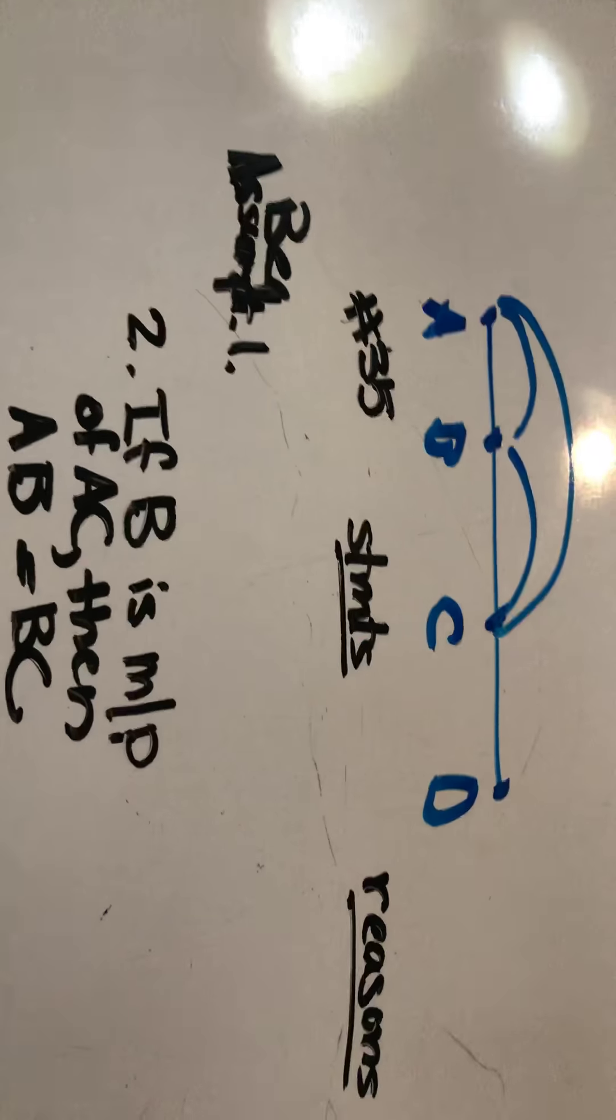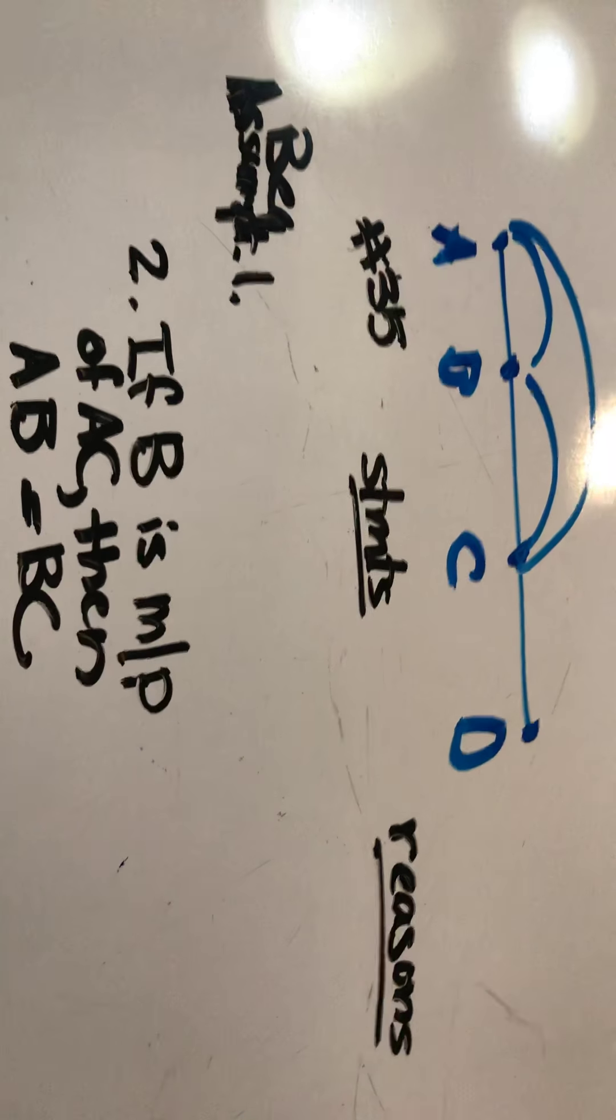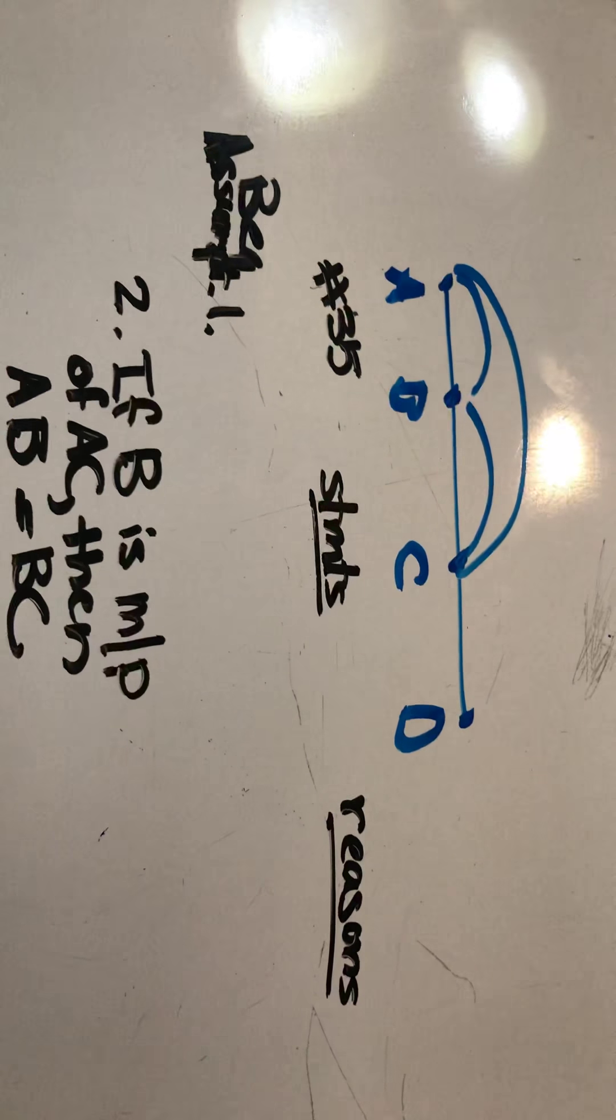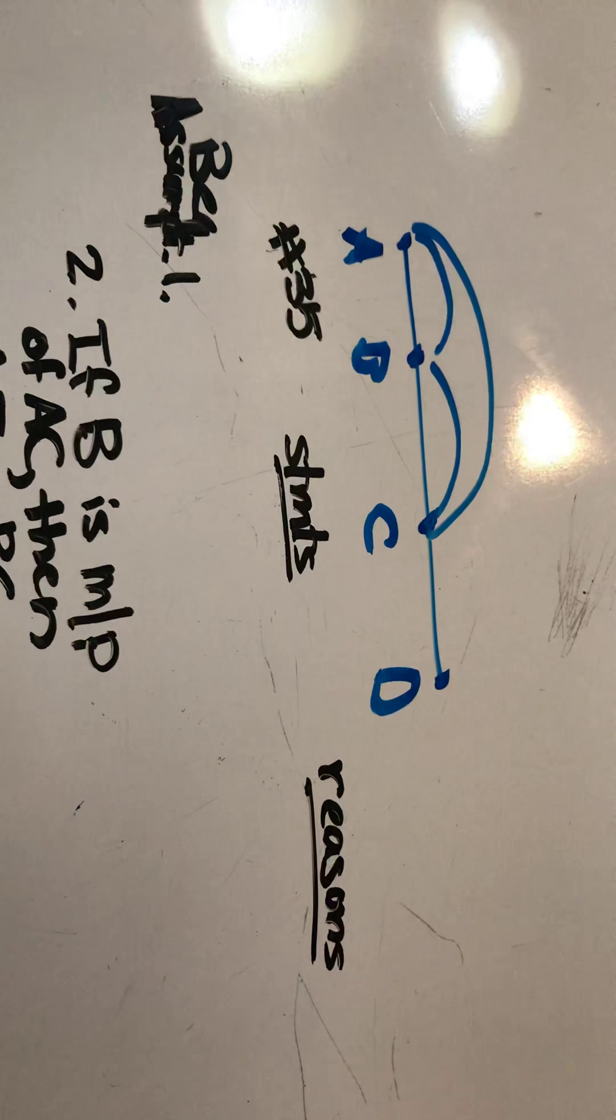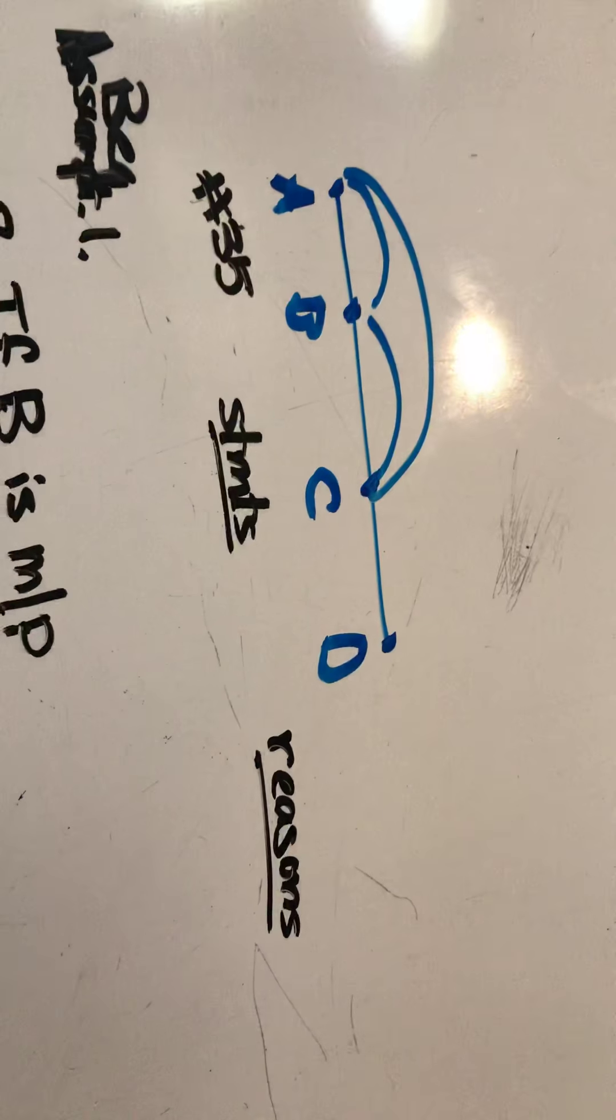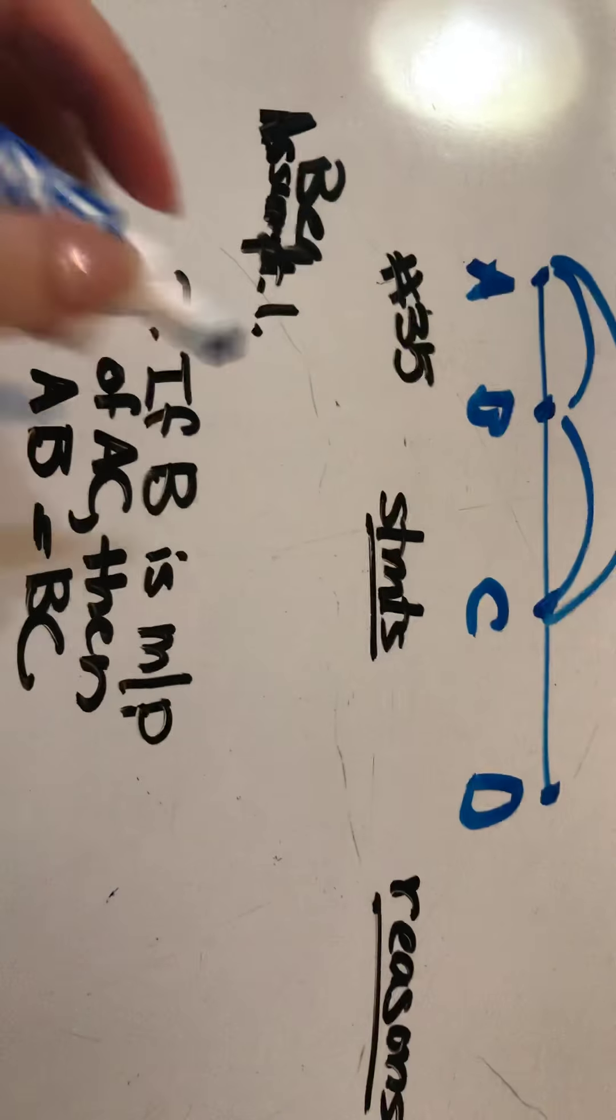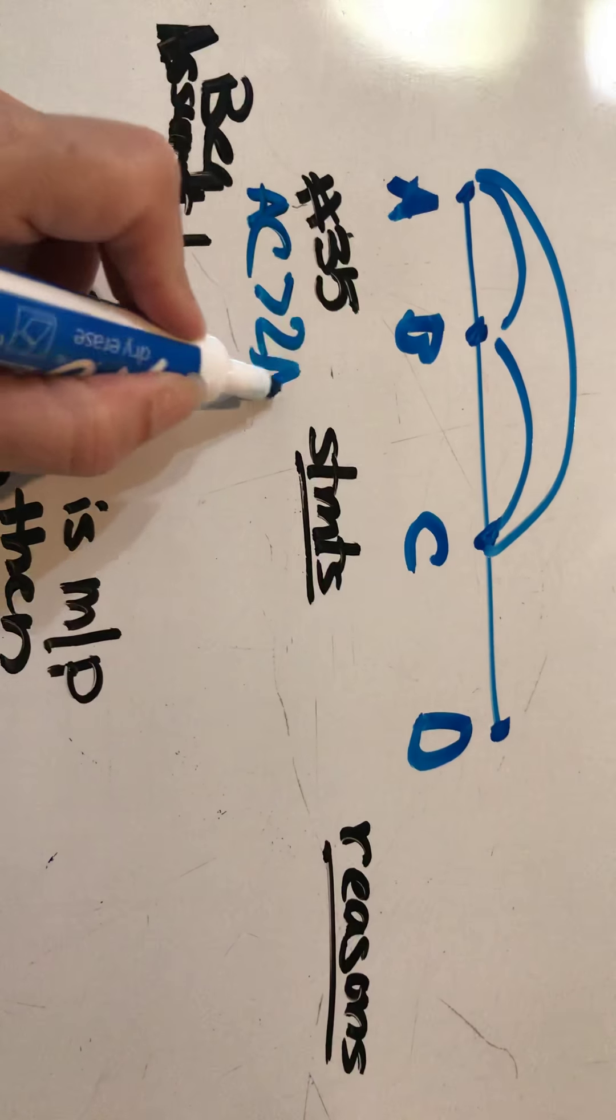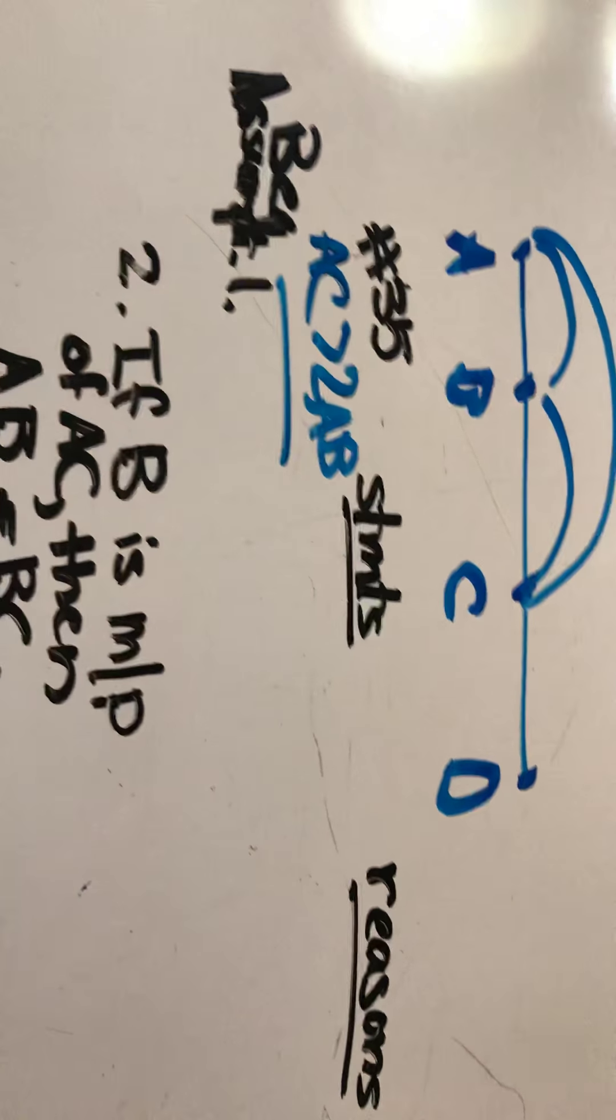If you read just above the problem, it says use the additional fact that AC is greater than 2AB. Alright, so that's the additional fact. We have to keep that in mind. AC is greater than 2AB. That's an additional fact that's given.